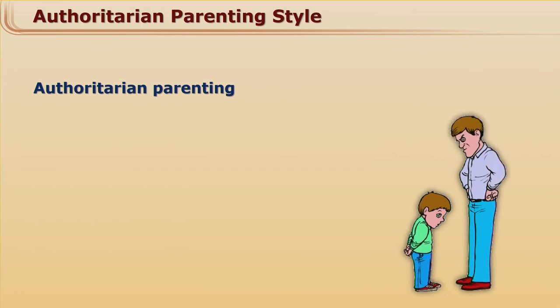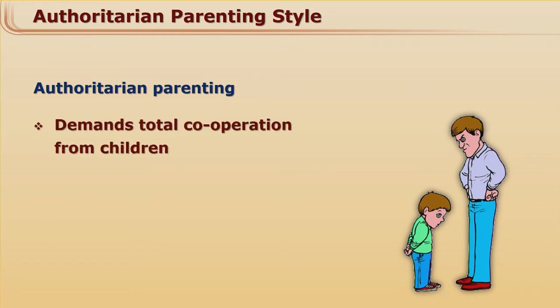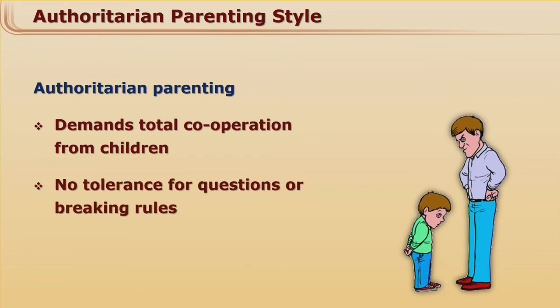So authority — parents hold the authority. They want the child to give total cooperation to the parent. They can't tolerate any question from the child, and they will not tolerate if the child is going to break the rules made by the parents.